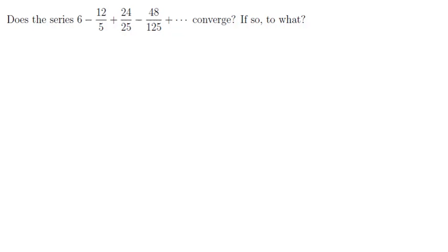Does the series 6 minus 12 fifths plus 24 twenty-fifths minus 48 one-twenty-fifths plus dot dot dot converge, and if so, what to?